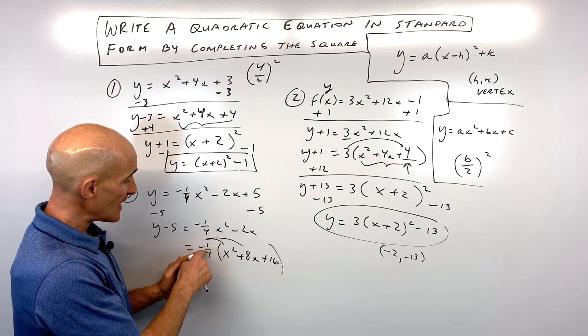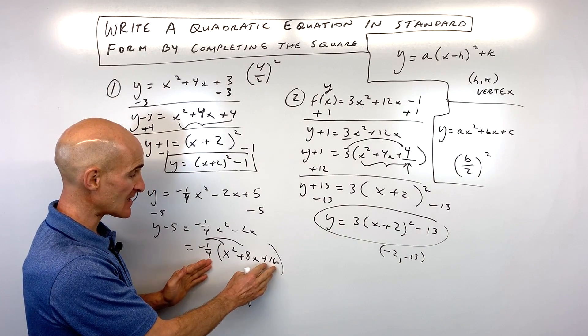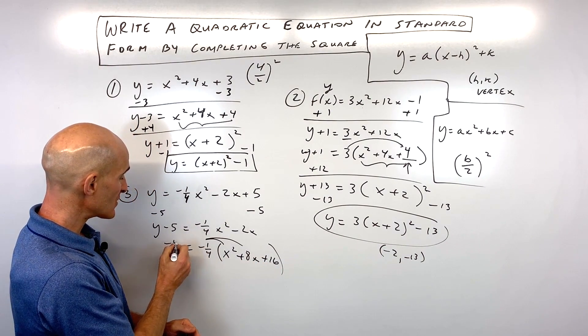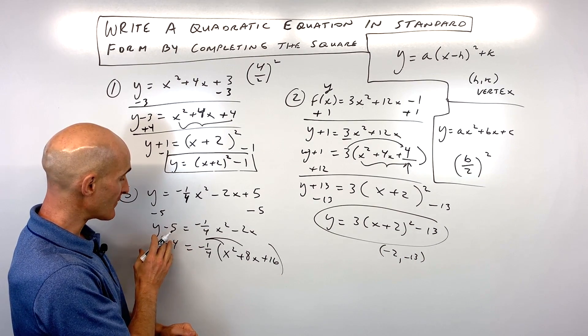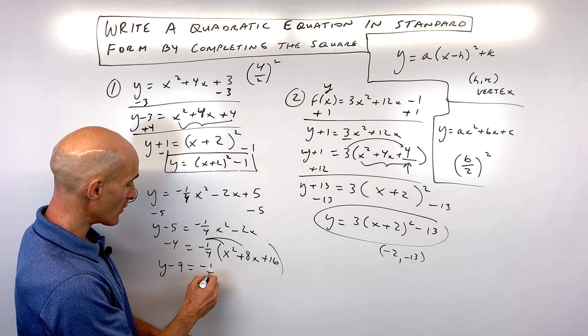No, because remember it's negative 1/4 times 16. I actually subtracted 4 from the right side because that's a negative 4. So what I'm going to do is I'm going to subtract 4 from the left side as well to keep this balanced. So we have y minus 9 equals negative 1/4.